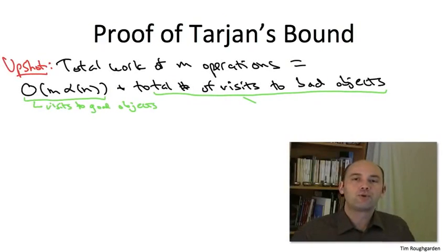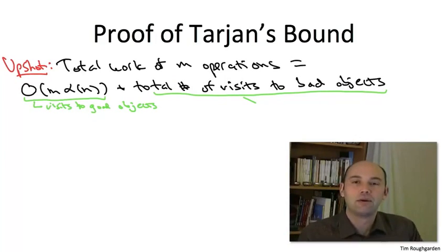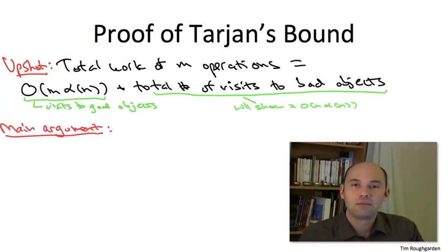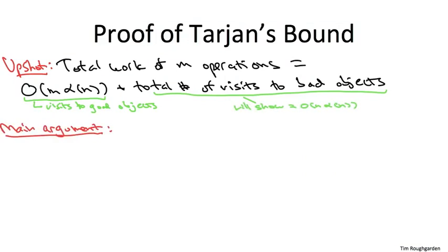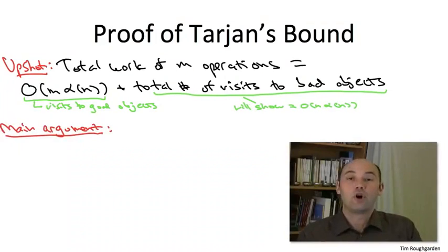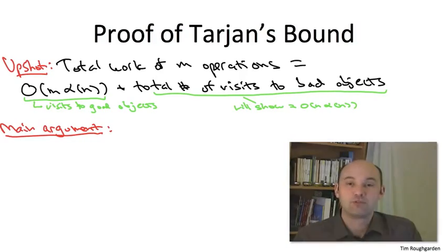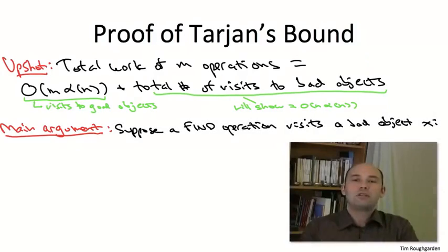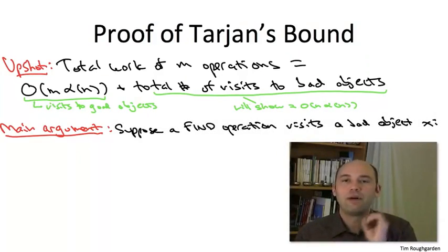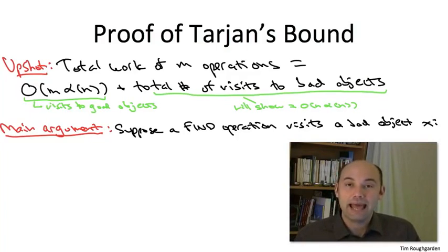The argument will be to show that over an arbitrary sequence of M find and union operations, the total number of visits to bad nodes is bounded above by O(N · α(N)). So here is the crux of the argument — here is why when you do a visit to a bad node, the subsequent path compression massively increases the gap between that object's rank and the rank of its parent. Let's freeze the data structure at the moment where a find operation makes a visit to a bad object. Call that bad object X.